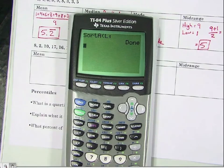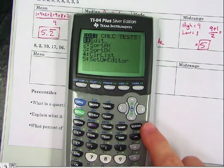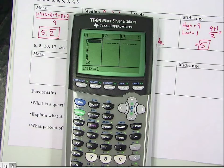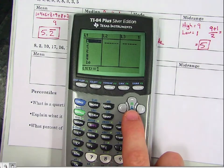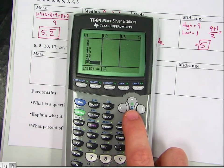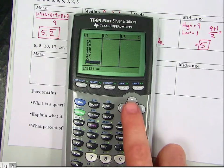So how do we get back to our list? First, we hit stat and edit. And all the data is in order for you there.